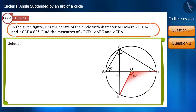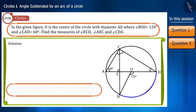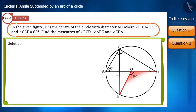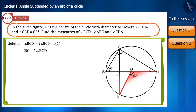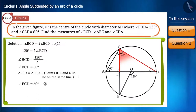Angle BOD is the angle subtended at the centre and angle BCD is the angle subtended at point C located on the remainder of the circle. We know that the angle subtended at the centre by an arc is twice the angle subtended at any point on the remainder of the circle. Therefore, the measure of angle BOD is twice angle BCD. Using the given value of angle BOD, we find angle BCD equals 60 degrees, and therefore angle ECD is also 60 degrees.